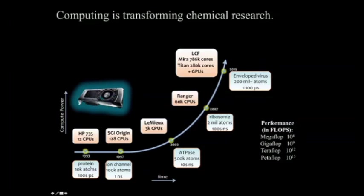In the early 90s the first computer came online and had about a dozen CPUs. With that system, using some of the approaches I'm going to tell you about today, they were able to study systems on the size of a single protein — about 10,000 atoms — and in terms of biological simulation we were able to sample time scales on the order of hundreds of picoseconds. Every four to five years since then we've increased our available computing power by about an order of magnitude.